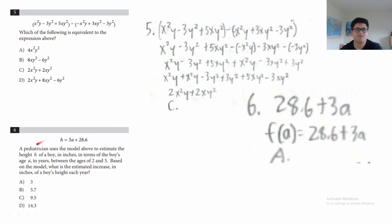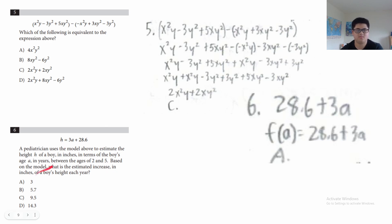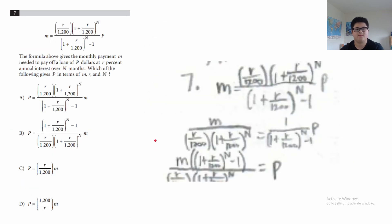Question 6: this model estimates the height of a boy in inches in terms of age between 2 and 5. Based on the model, what is the estimated increase in inches for a boy's height each year? H is the height, A is the age in years. For every increase in A by 1, H increases by 3. The answer is A. You could also graph it to see that every time A increases by 1, H increases by 3.